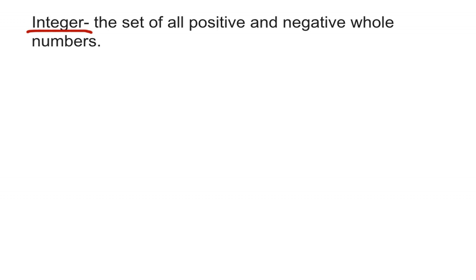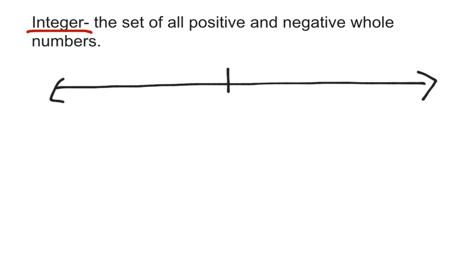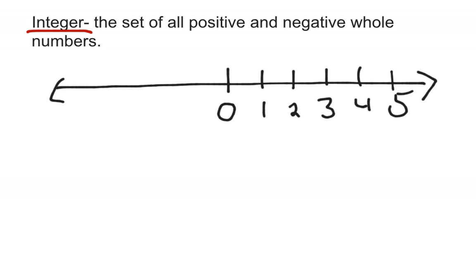I'm going to draw a number line. You've seen number lines before. I'll start with zero in the center. Zero is a number that isn't positive or negative. Positive numbers start at zero and move to the right: one, two, three, four, five. As we move to the right, numbers are getting bigger - zero, one, two, three, four, five. Moving to the left, numbers are getting smaller.